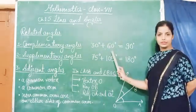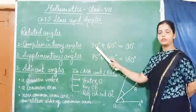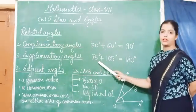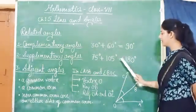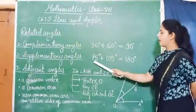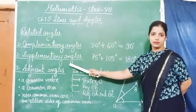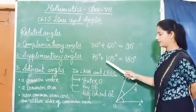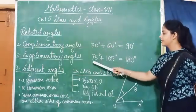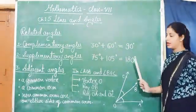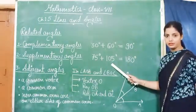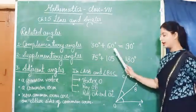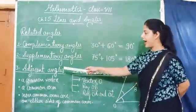Each angle is called the complement of the other angle — 30 degrees is the complement of 60 degrees and 60 degrees is the complement of 30 degrees. The second type is supplementary angles. A pair of angles whose sum is always 180 degrees is called supplementary angles. If we take the first angle as 75 degrees and the other as 105 degrees, their sum is 180 degrees, so they are supplementary angles. Each angle is called the supplement of the other — 75 degrees is the supplement of 105 degrees and vice versa.